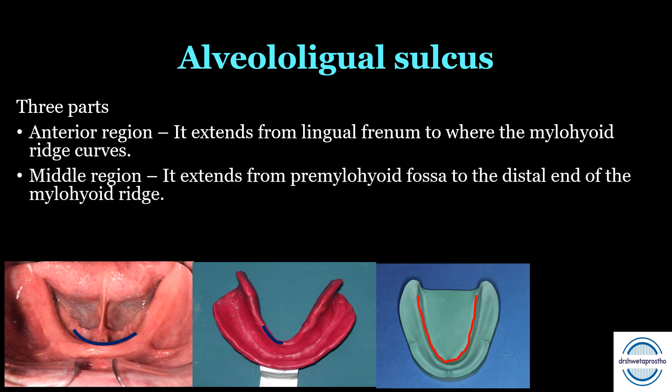Second is the middle region, extending from the pre-mylohyoid fossa to the distal end of the mylohyoid ridge. The lingual flange moves medially towards the tongue because of the prominence of the mylohyoid ridge. This area helps in stabilization of the denture as the tongue will rest here, and also helps to maintain the seal of the denture.